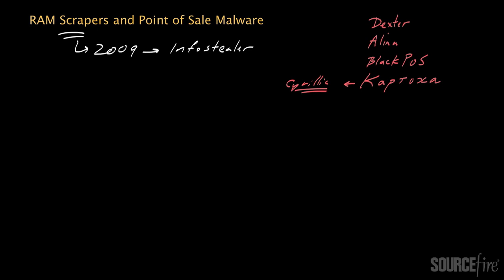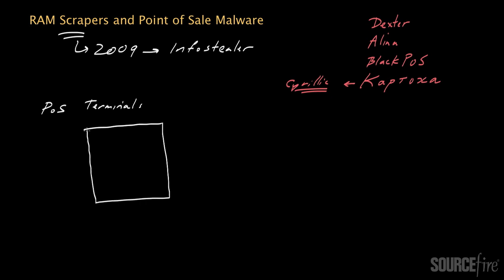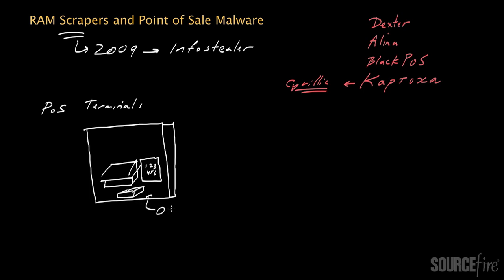We often see RAM scraping malware deployed onto point-of-sale terminals, or POS terminals. These are the devices into which you slide your credit card when you buy something at a store. Typically the POS terminal will have a special magnetic card stripe reader and might also have a numeric keypad for entering a PIN. The point-of-sale terminal is also a computer — it processes data and might contain a hard drive where data is stored.